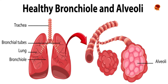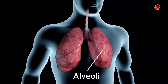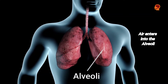Our lungs are large, spongy, elastic airbags or respiratory organs that breathe in atmospheric air. They consist of air tubes and alveoli — the tiny air sacs — blood vessels, and elastic tissues. The lungs are placed in the thoracic cavity on each side of the heart and connected with the trachea, or windpipe.